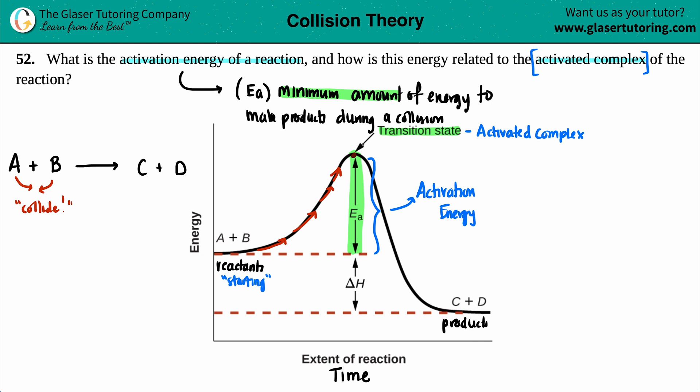So the activated complex or the transition state is the point in which you have your maximum energy. It's the tippy, tippy, tippy top of the iceberg for your energy diagram. And once you reach your activation energy, you will form this, you'll form an activated complex or a transition state.